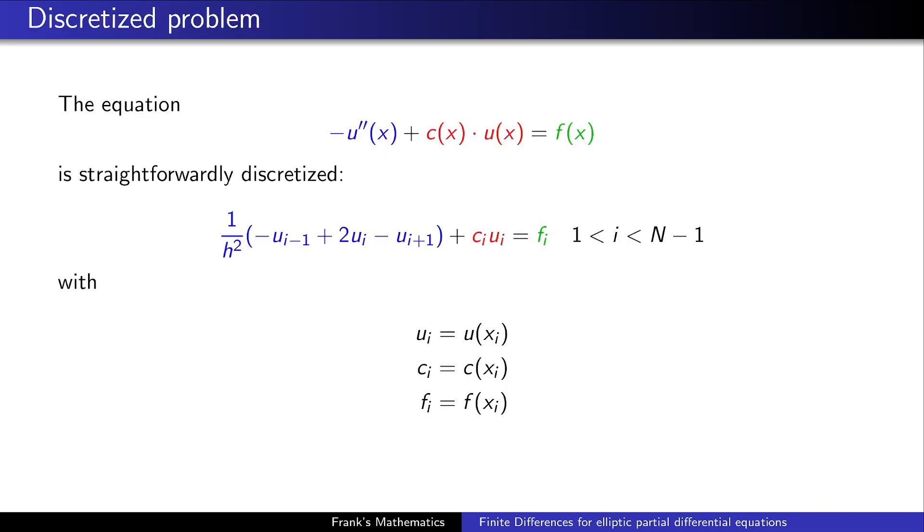Let's start with the discretization of our partial differential equation. The blue part, so the second derivative, is straightforward, discretized into this part. This had been done in the first part of the series. And the green part, well, it's obviously just fᵢ. You can see the abbreviations here. So fᵢ is just f applied to xᵢ, and uᵢ is just u applied to xᵢ. And the new thing is the red part, but this is very easily discretized. Well, c(x) will, of course, be transformed to cᵢ and u(x) will be transformed to uᵢ. So nothing spectacular happens here.